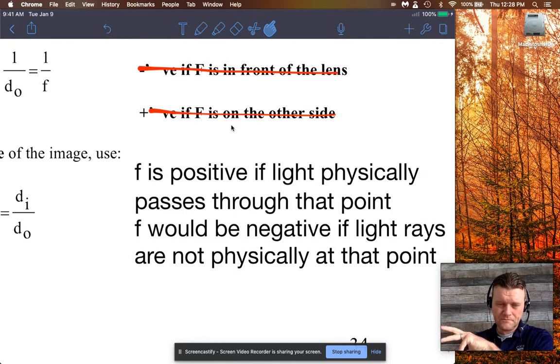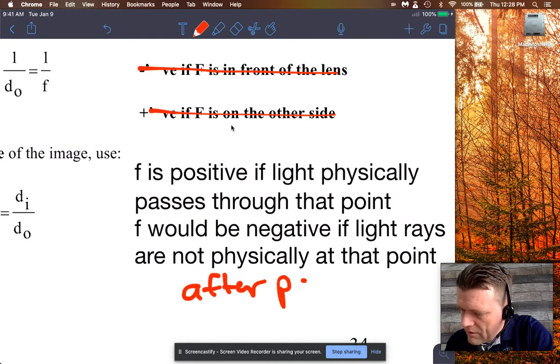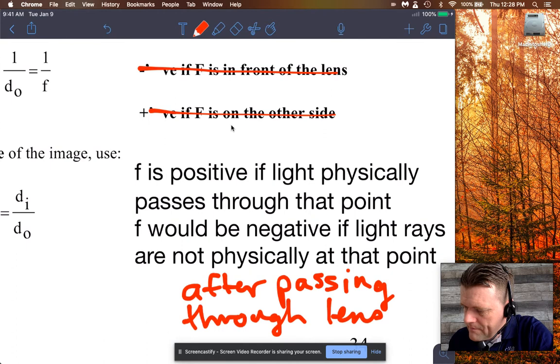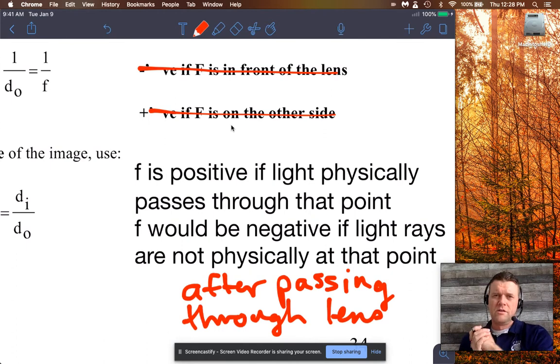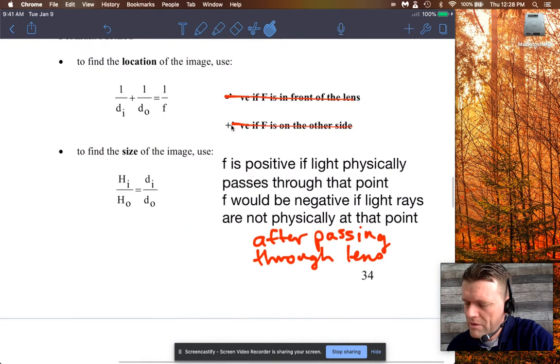I added this here: f is positive if the light physically passes through that point, and f would be negative if light rays are not physically at that point. I guess we should add this is after passing through the lens. But the simple part is that converging lenses have positive focal lengths and diverging lenses have negative focal lengths. I apologize for all this detail—there's a ton of detail with mirrors and lenses, but the math itself isn't terribly complex.